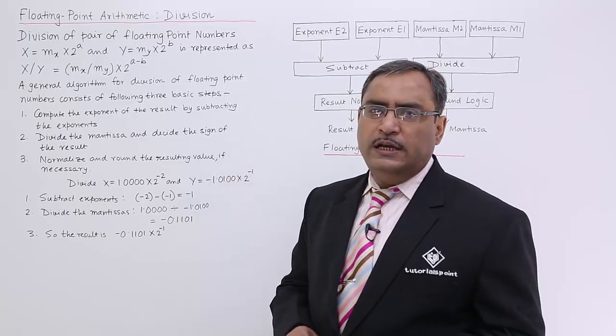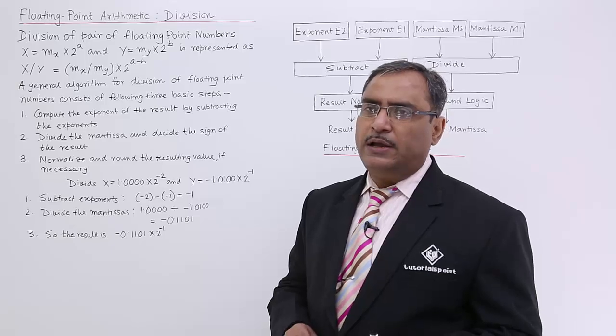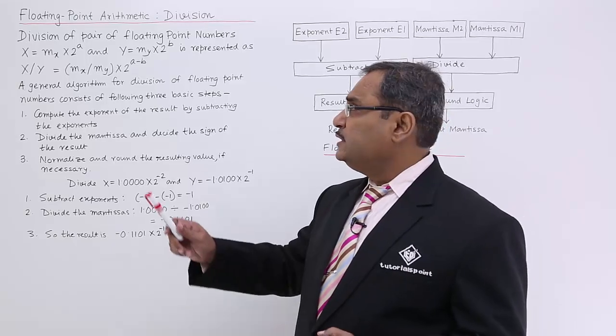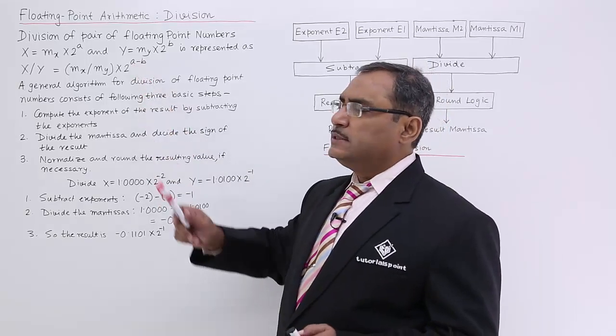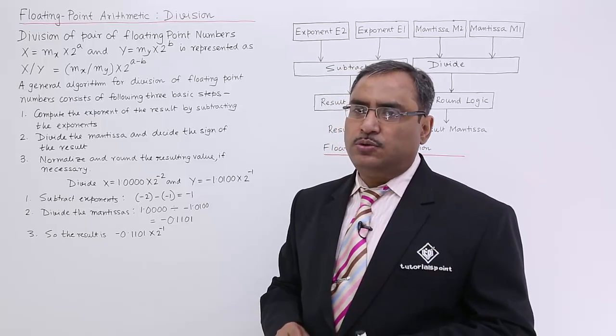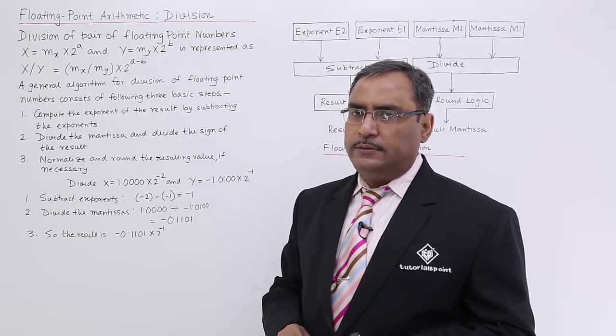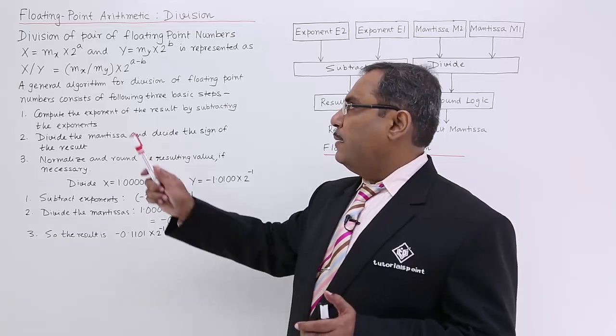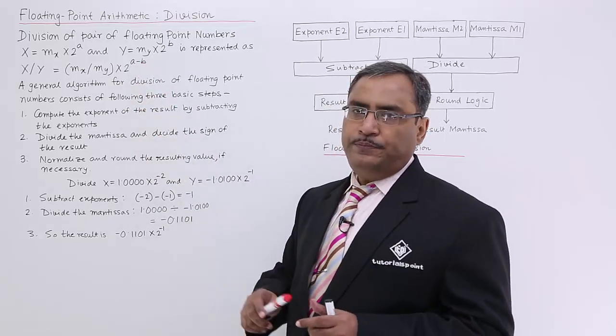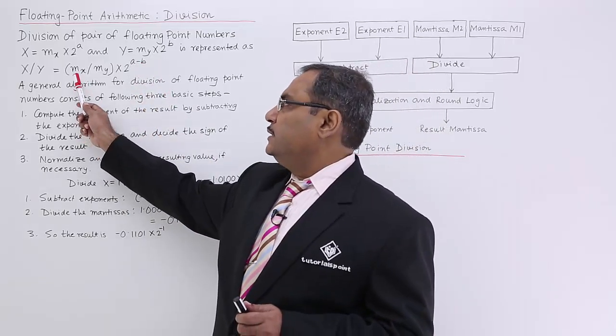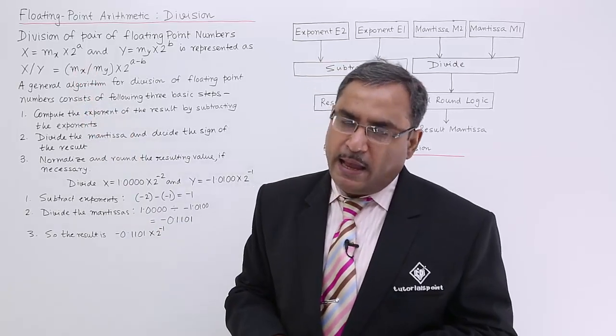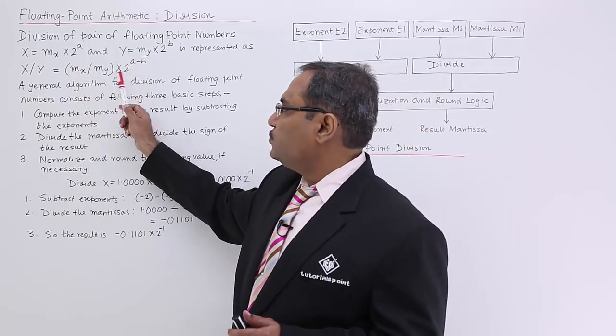Now if I go for the division operation, that means x by y, then obviously the exponents are getting subtracted. So in the resultant, in the quotient we will be having this exponent a minus b, and here in the result the mantissa will be mx by my. So it has to be done in this way.